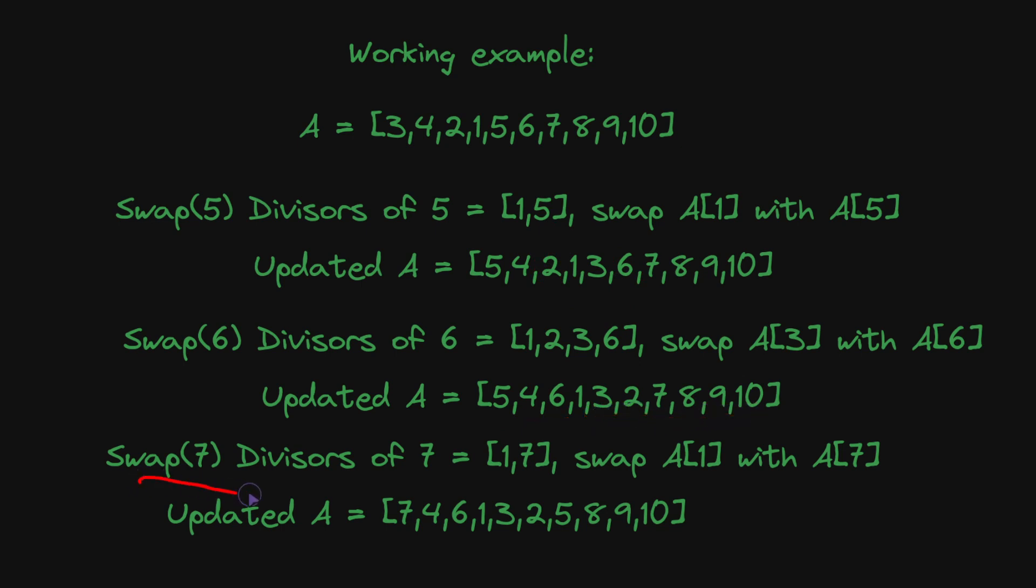The divisors of 7 are 1 and 7, and the largest one less than 7 is 1 only. So we swap a1 with a7. The 7 comes to the front and 5 goes to the place of 7. The array becomes 7, 4, 6, 1, 3, 2, 5, 8, 9, 10. You will notice that the position of 1 has not changed. It's at position index 4 only so far.